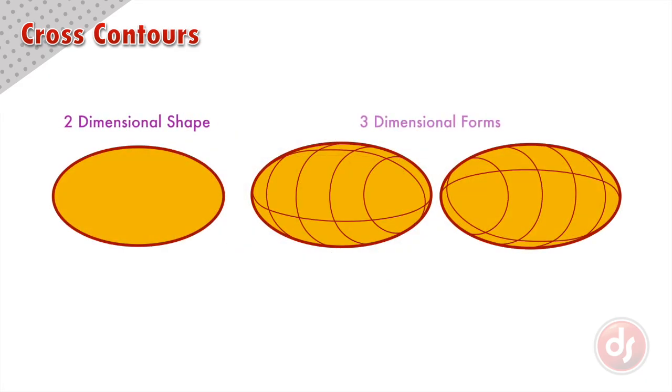We went from a two-dimensional shape to a three-dimensional form by adding cross contours over the surface. This creates volume and defines the object's position in space.